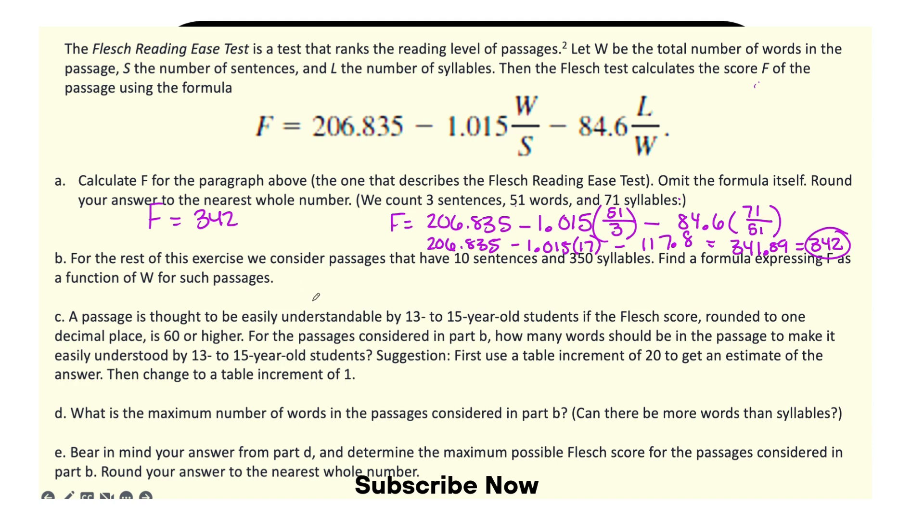For the rest of this exercise we consider passages that have 10 sentences and 350 syllables. Find a formula expressing F as a function of W for such passages.